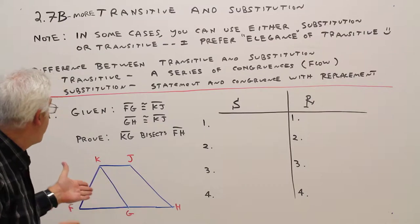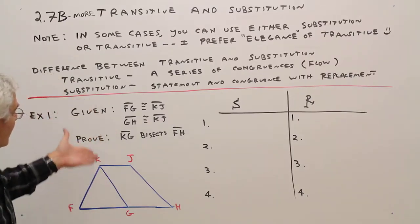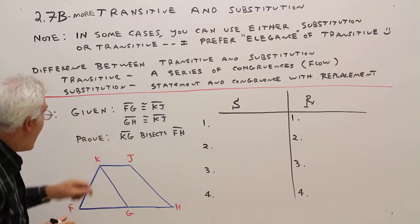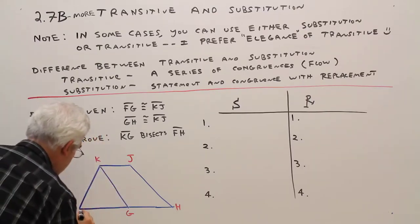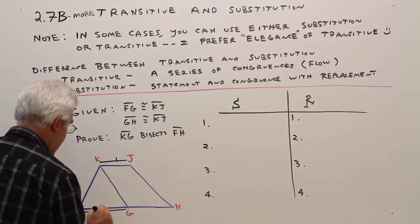Let's take a look at a proof. Example 1. Given this information, let's mark it up. FG is congruent to KJ. Just go tick, tick.